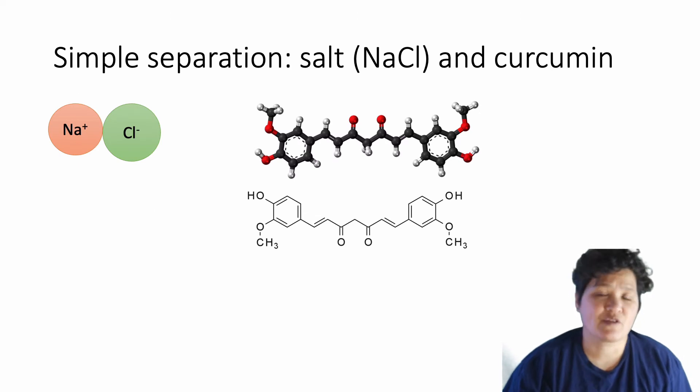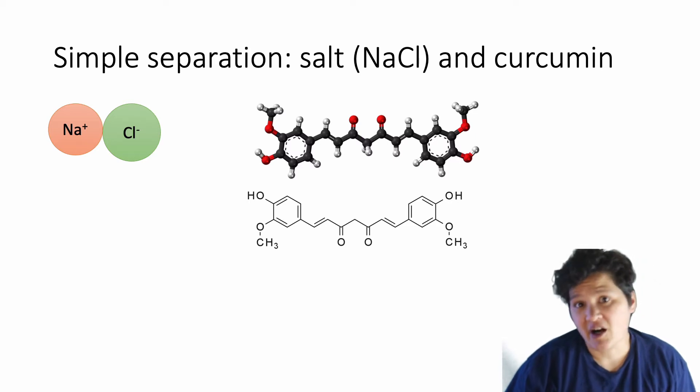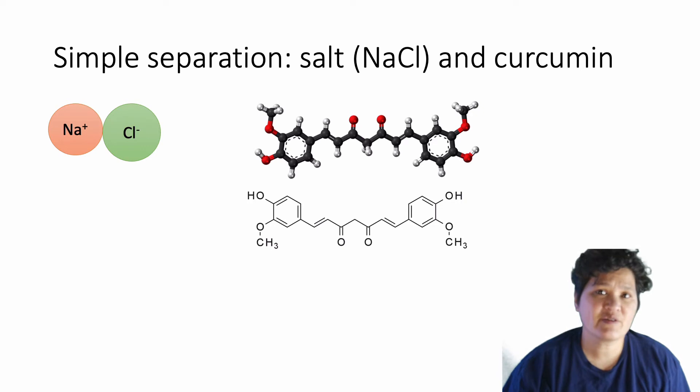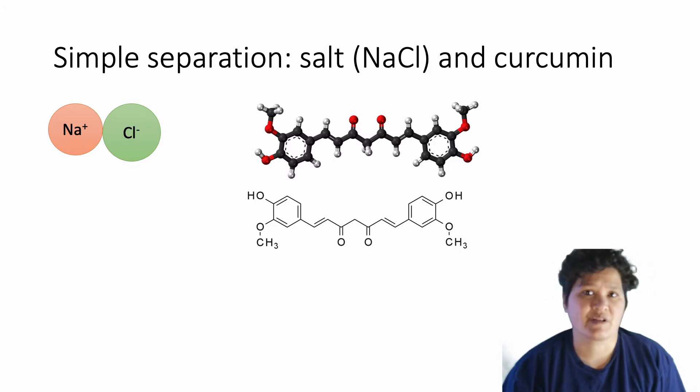Now let's look at a simple separation of two solids that you might do in organic lab. Our two solids in this case are table salt, or sodium chloride, and curcumin, also known as turmeric. Sodium chloride is an ionic compound, and therefore will do quite well in polar solvents. On the other hand, curcumin has some polar functional groups, but the majority of the molecule is non-polar. So how would you separate these two things?